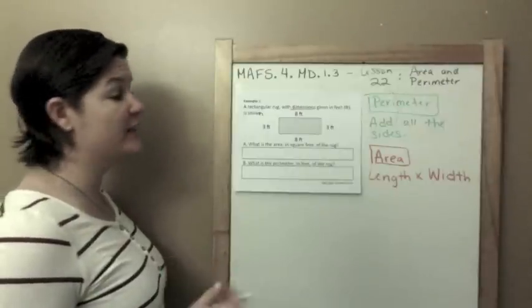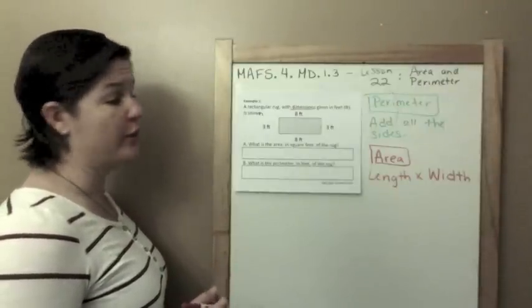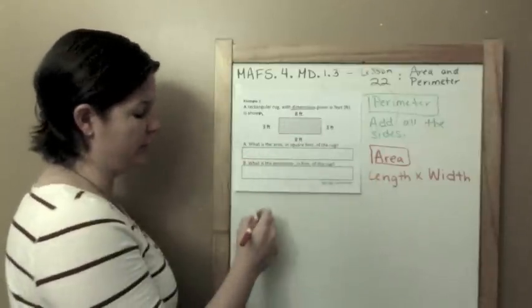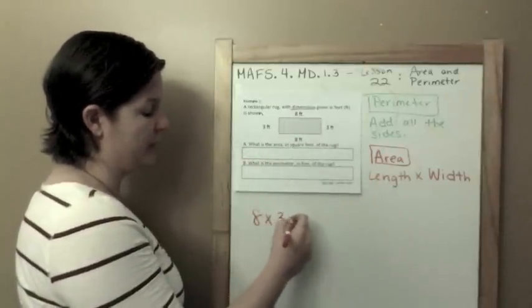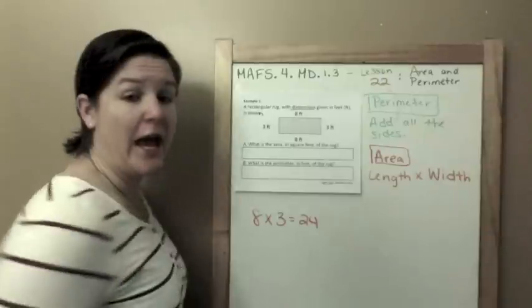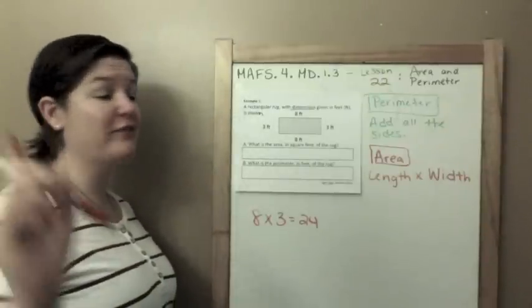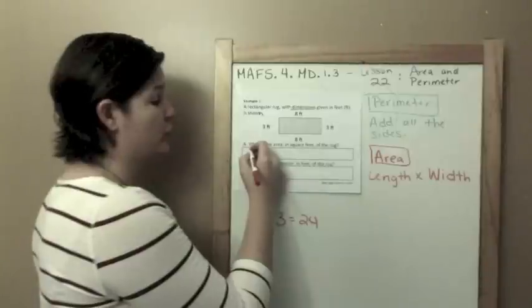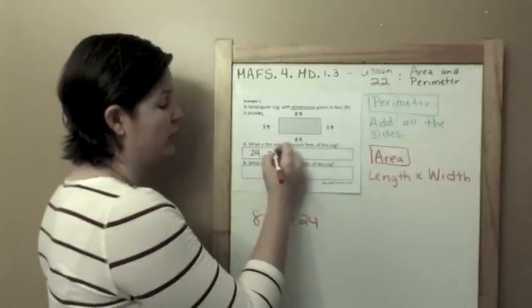It is shown. We've got 8 feet, 3 feet, 8 feet, 3 feet. What is the area in square feet of the rug? So the area, we multiply the length times the width. So 8 times 3 equals 24, and remember for area you have to write square in your answer, so 24 square feet.